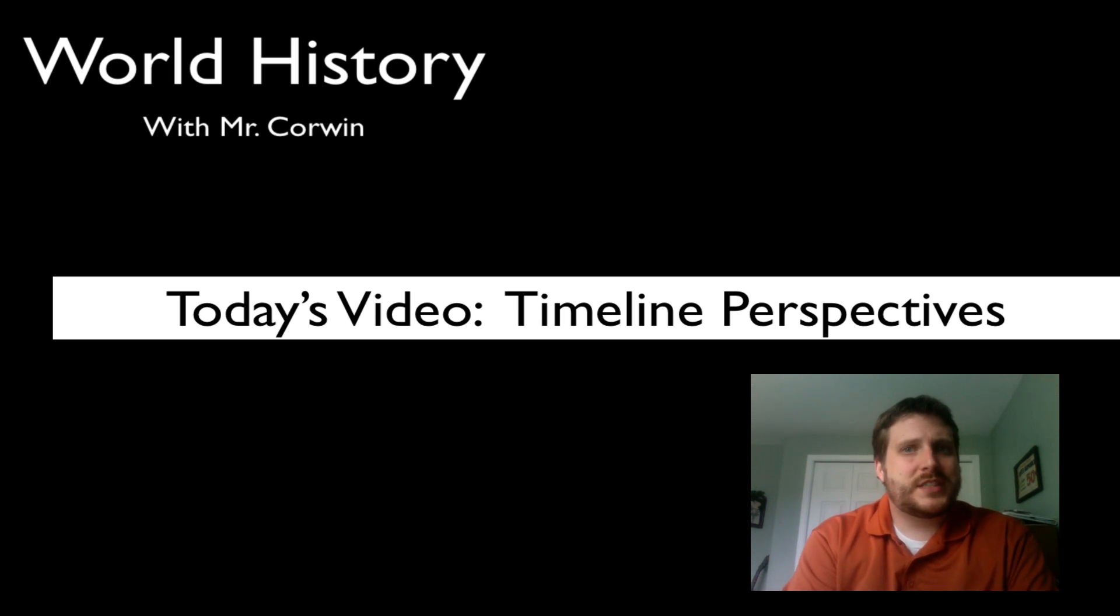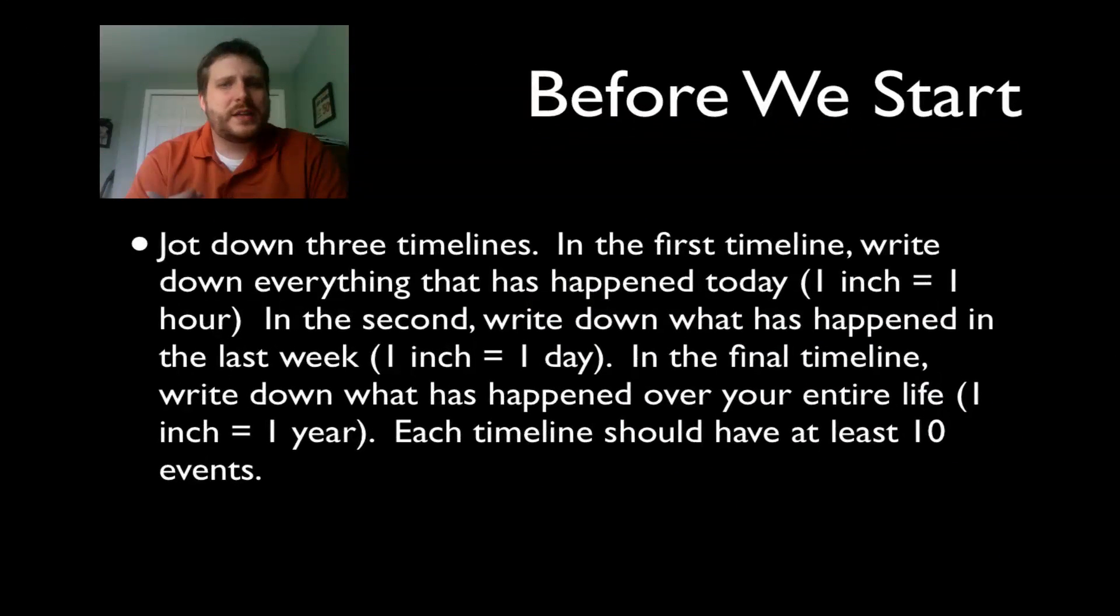But to help you understand a little bit about what we're talking about, I got something for you to do before you even start. Here's what I want you to do. You're going to pause the video and jot down three timelines. At the first timeline, you're going to write down everything that has happened today, at least 10 events. And I want you to space it out about one inch equals one hour. So actually, you'll only be doing about the last 10 to 12 hours, depending on how big your paper is.